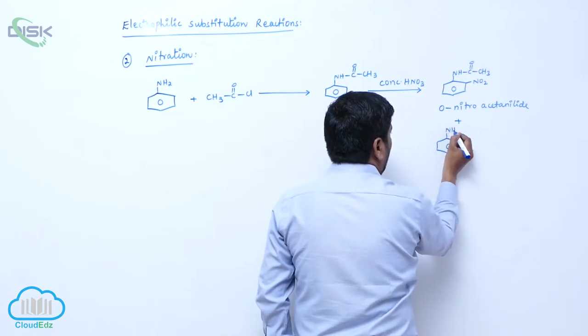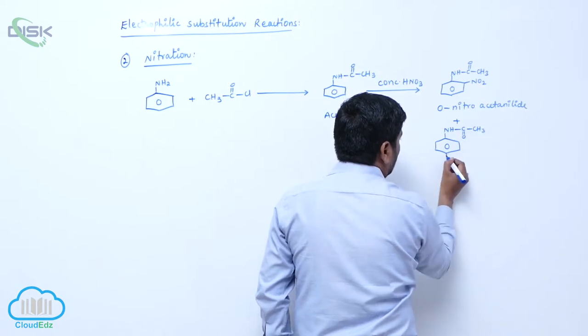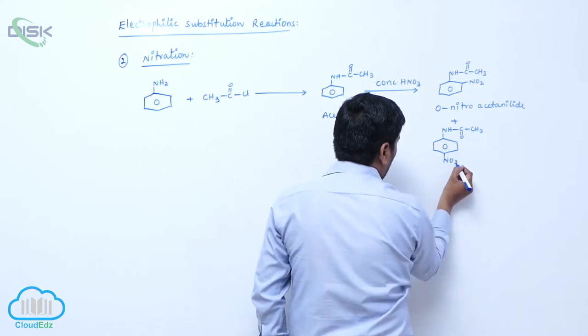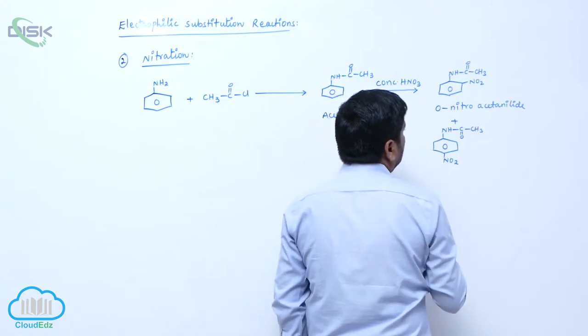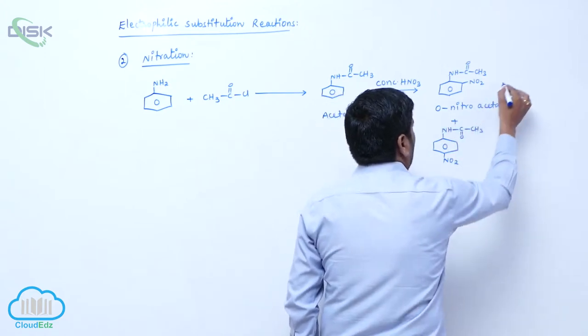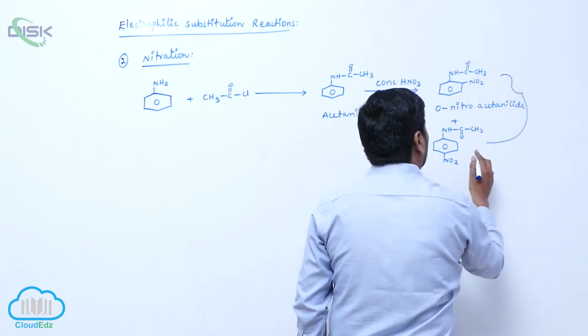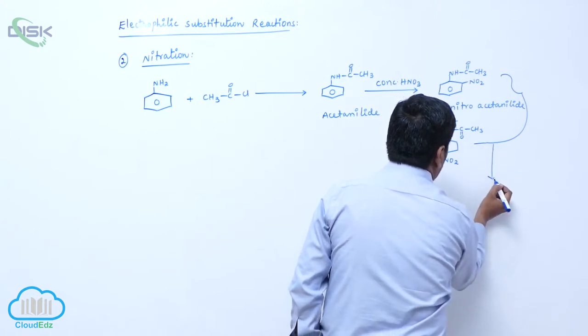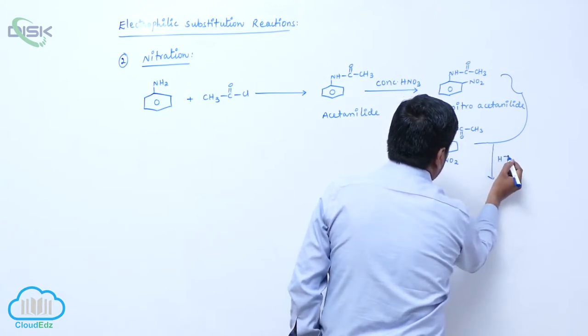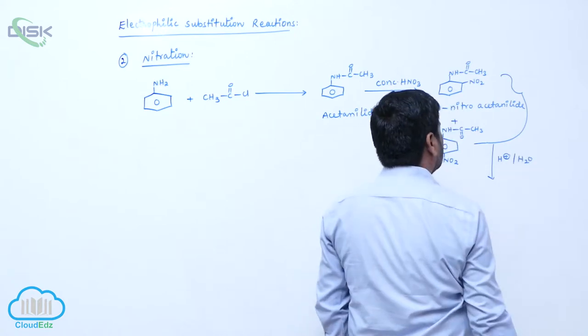NH-C double bond OCH3. This is paranitroacetylchloride. Now this mixture of products on hydrolysis